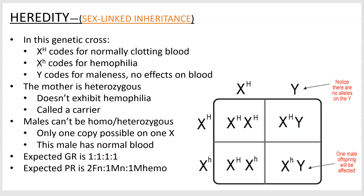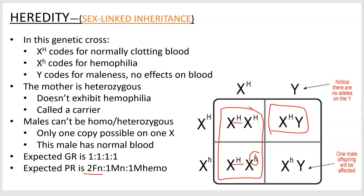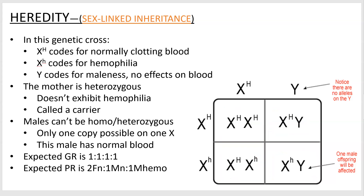When it comes to the phenotypic ratio, you have two females with normal blood — both have at least one big H covering the little h — one male with normal blood, and one male with hemophilia. It's easily treatable these days, so it's not that bad.